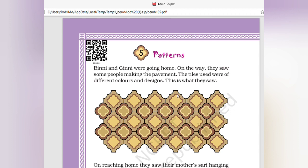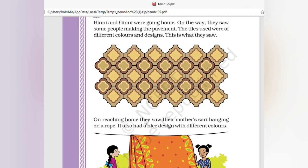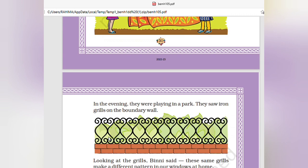This is what they saw. On reaching home, they saw the mother's sari hanging on a rope. It also had a nice design with different colors. In the evening, they were playing in the park. They saw iron grills on the boundary wall.